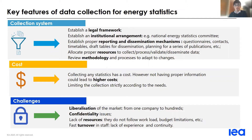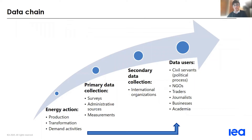For the main features, we tried to represent what we call the data chain. The data chain is basically all the steps that take place from the energy action — the physical reality that is going to translate into a data point — and then all the steps that take you to the final data user of this information.